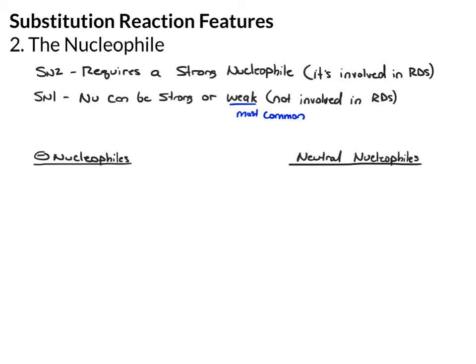For negatively charged nucleophiles, we can have halide ions: F⁻, Cl⁻, Br⁻, or I⁻. We can have oxygen anions, things like hydroxide or alkoxide. Remember, these can be written as the negatively charged nucleophile alone, or with a counter cation. If you see R bonded to oxygen with a sodium, think of that as Na⁺ O⁻ — break that apart.